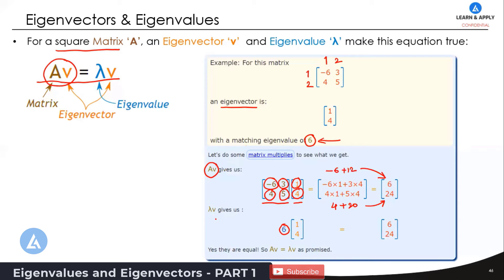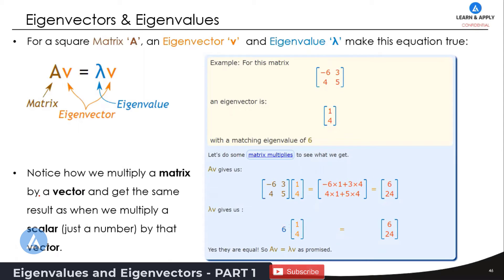So the left side equals the right side: Av = λv. When you multiply a matrix by a vector and get the same result as multiplying a scalar by that vector, that scalar is called the eigenvalue and that vector is called the eigenvector.